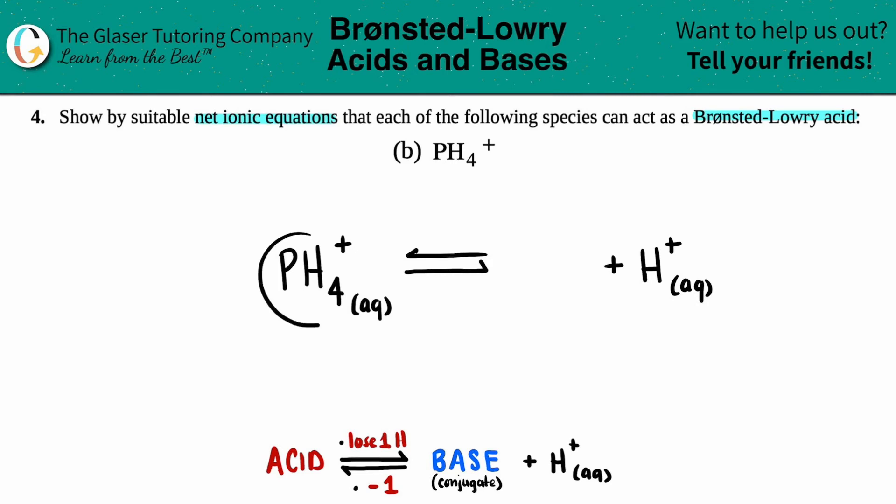Now you just basically write everything that's left over. Well, instead of four hydrogens, if one gets lost, there's going to be three left over. So I have PH3. That's losing one hydrogen. And now all we got to do is just minus one from the overall charge.